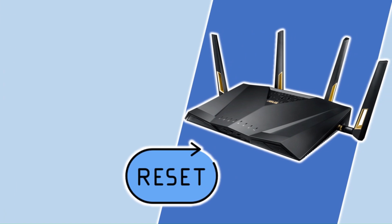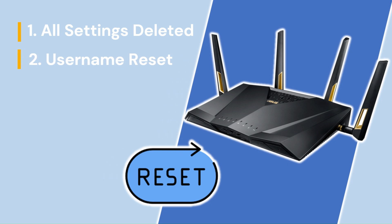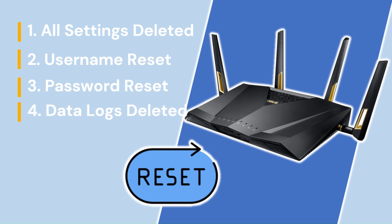When you start the factory reset procedure on your Asus router, you can expect the following things to happen. First, all the settings you have made are deleted and replaced with the Asus default settings. The username and password changes back to the default — admin and admin. All data logs for features like AI protection are deleted, including system logs, Wi-Fi logs, DHCP logs, routing tables, port forwarding rules, etc. After everything is deleted, the Asus router restarts using its factory settings and all the LED lights are turned off temporarily. When the factory reset and restart is finalized, the LEDs are automatically switched back on and you can start using the router. You'll then have to reconfigure your Asus router again as if it was fresh out of the box.